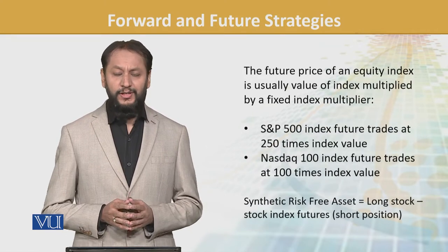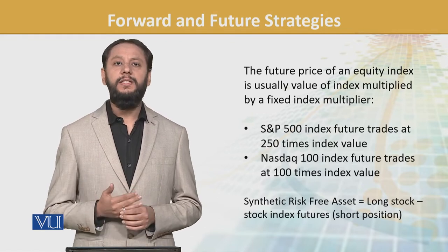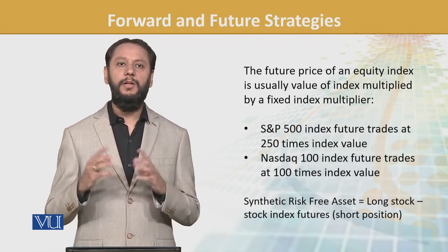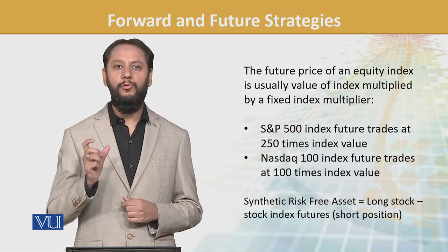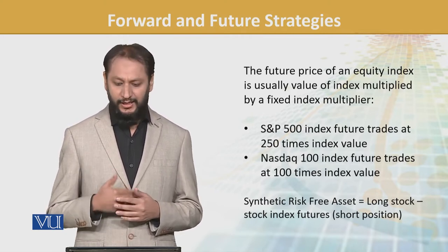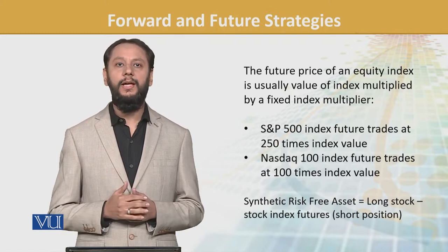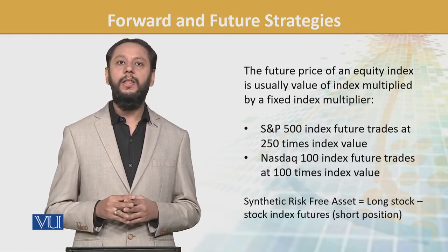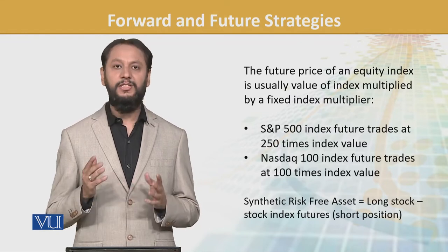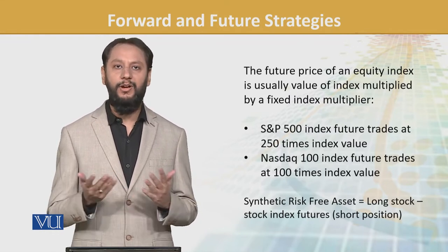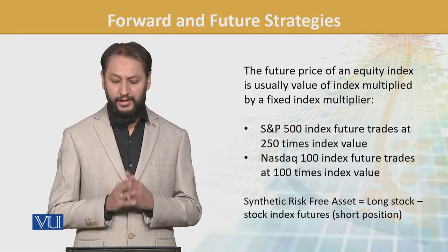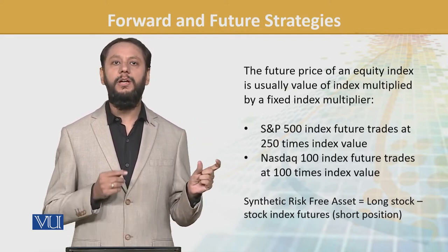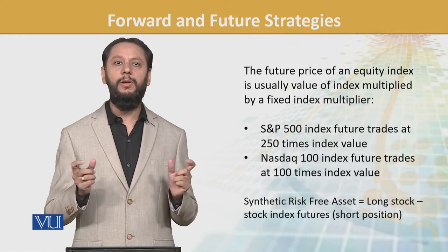The future of an equity index — when we talk about the KSE 100 index or KMI 30 index — when we say we want to have a future on an index, we operate this way: it has an index value, which is the index number, and that is multiplied by a fixed multiplier. For example, S&P 500 futures use a multiplier of 250 times, because it is a reasonable number and value.